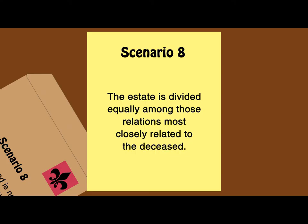In the direct line, it is necessary to count the number of generations between the person who qualifies to inherit and the deceased. In the collateral line, one must first find the common ancestor of both the deceased and the person who qualifies to inherit, then count the number of generations between the common ancestor and the deceased, plus the number of degrees between the common ancestor and the person who qualifies to inherit.